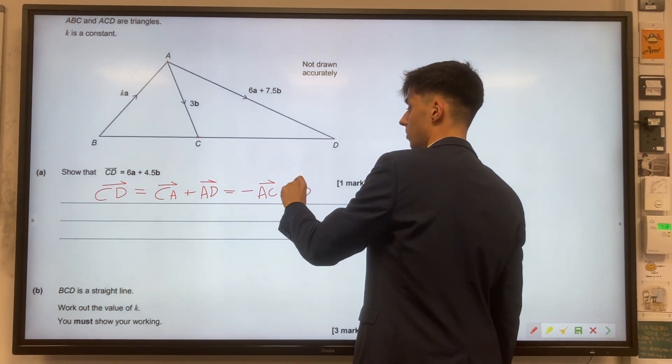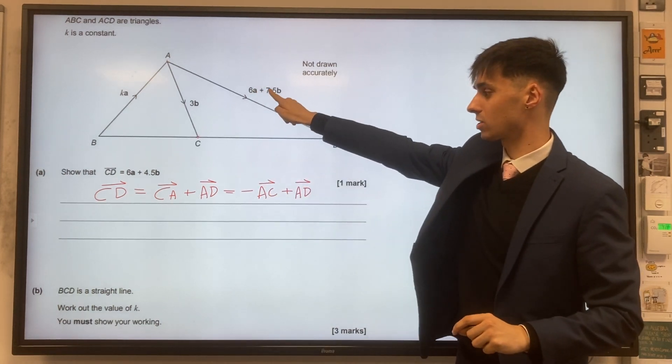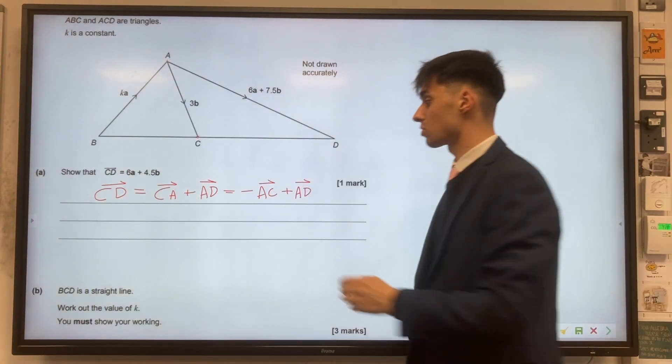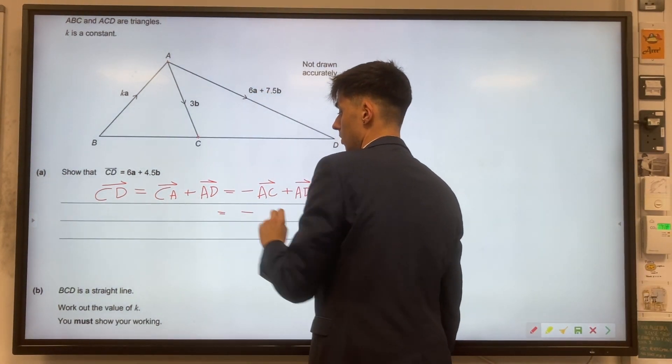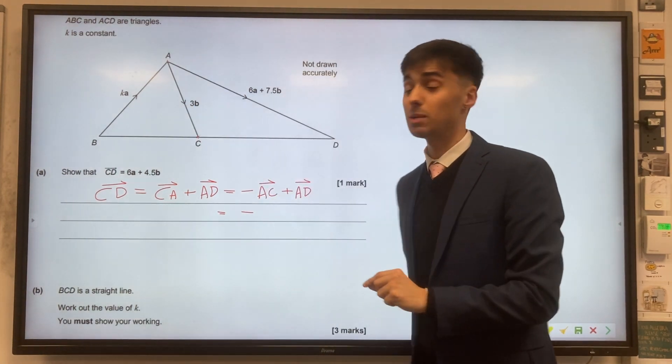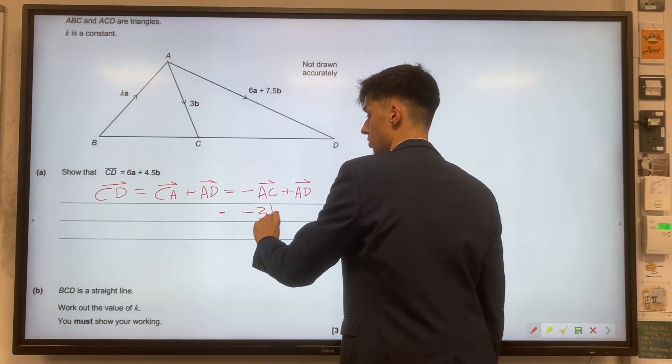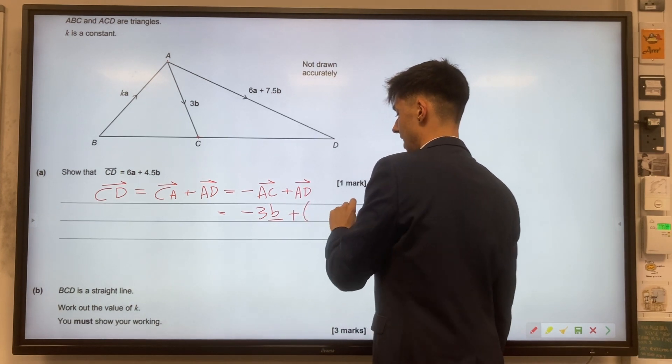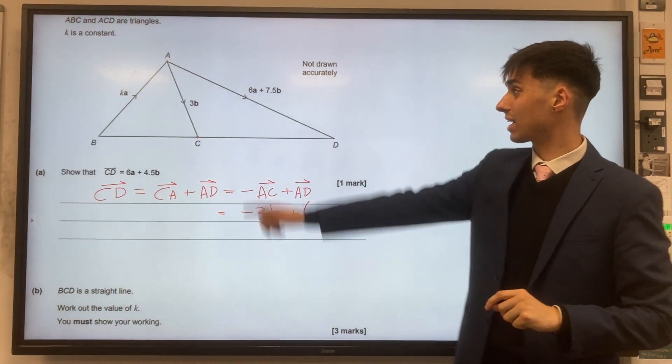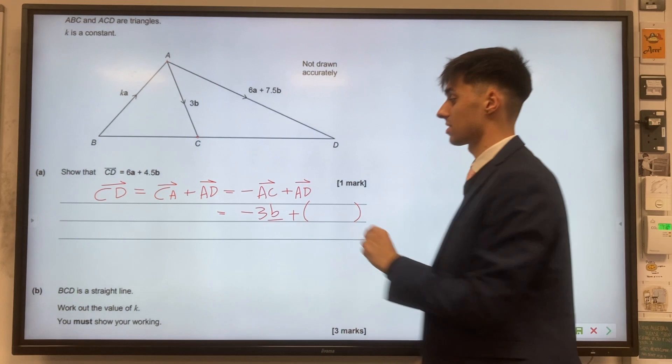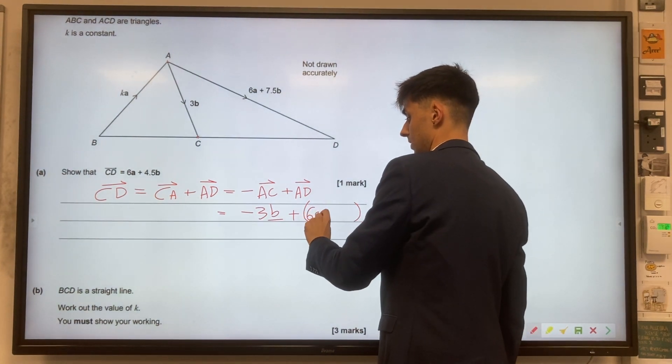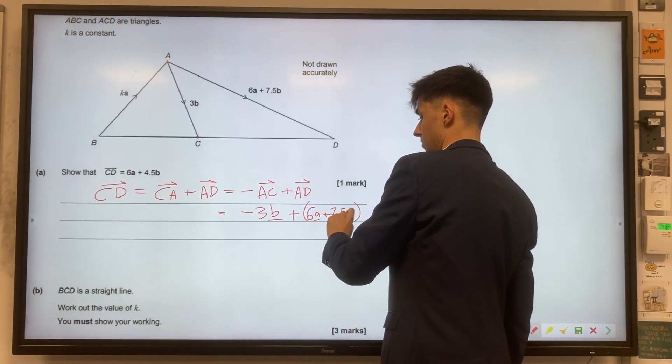We were given, though, A to D, this vector. So putting those two back into what we've got, minus AC is our minus 3B. And then adding our AD vector, we have 6A plus 7.5B.